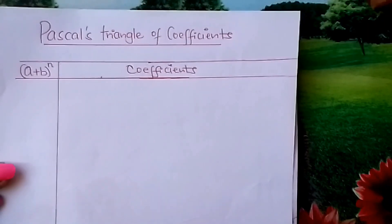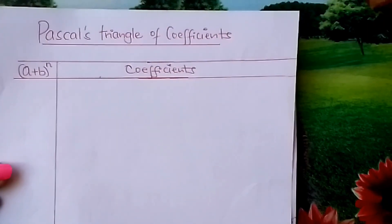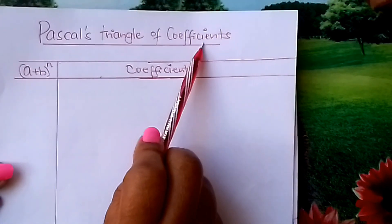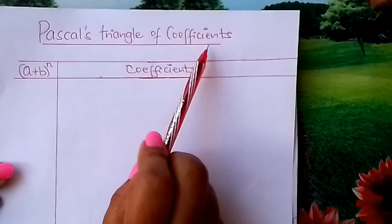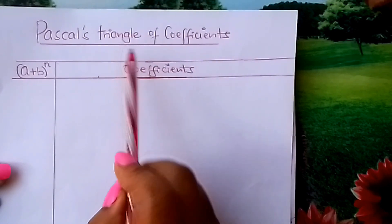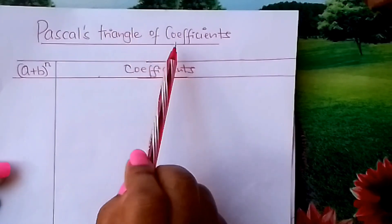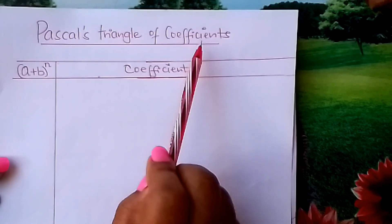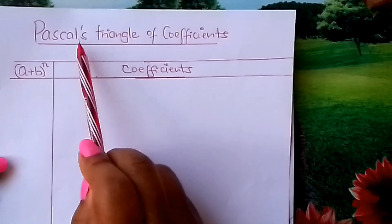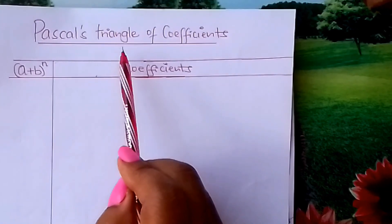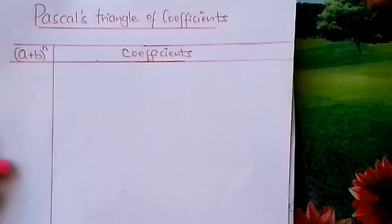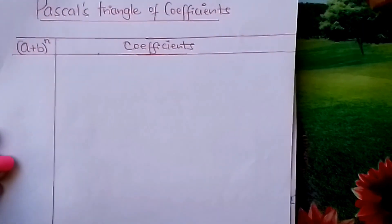Welcome, learners, to Form 3 Mathematics. Today I would like to show you how to come up with Pascal's triangle of coefficients. This is in binomial expansion — that topic we call binomial expansion. Most of the time, learners, we get these coefficients from mathematical tables. But today I would like to remind you how you can make the Pascal's triangle of coefficients — the ones that you fix in the terms when expanding binomials.